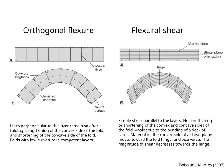Material on the convex side of a shear plane moves toward the fold hinge, and vice versa. The magnitude of shear decreases towards the hinge and is zero at the hinge.